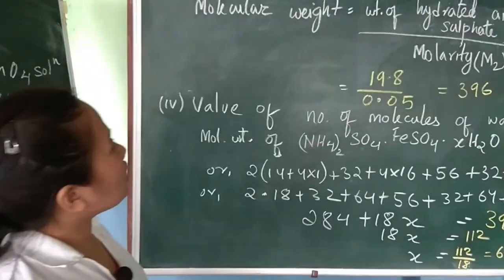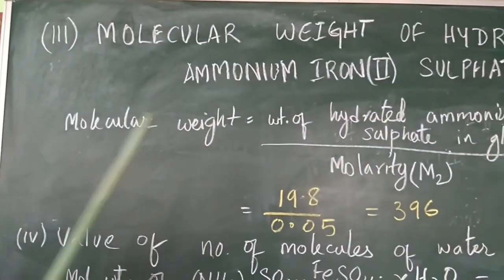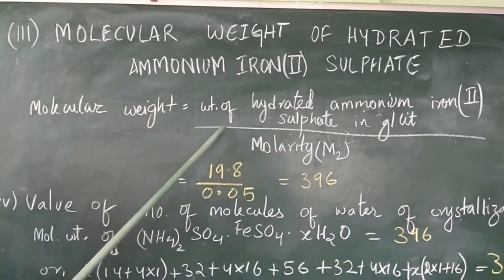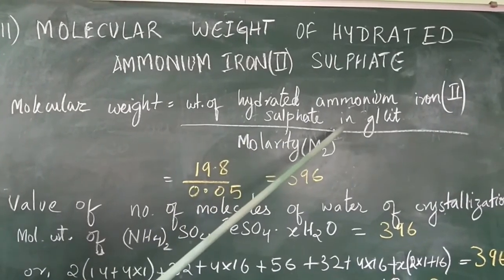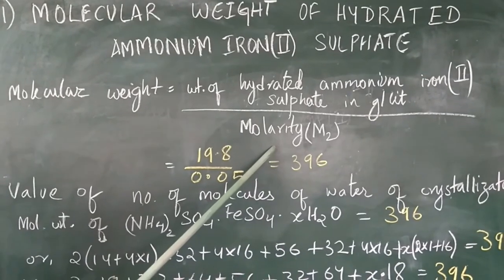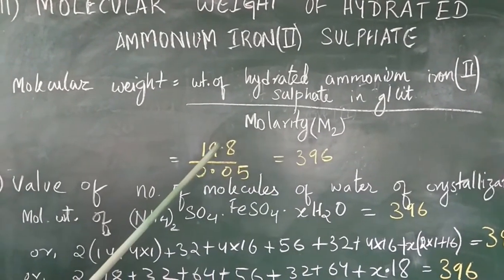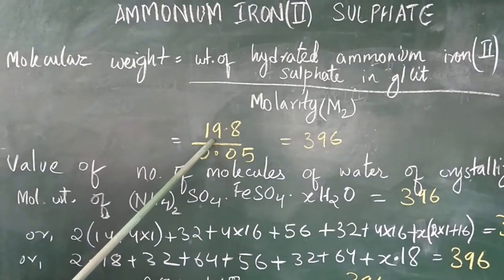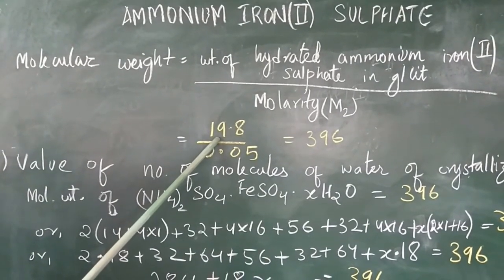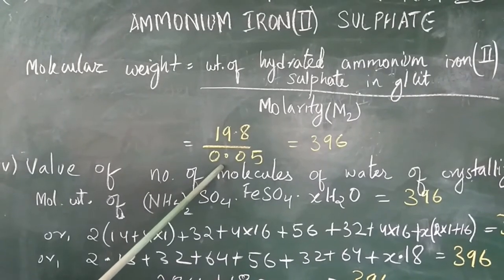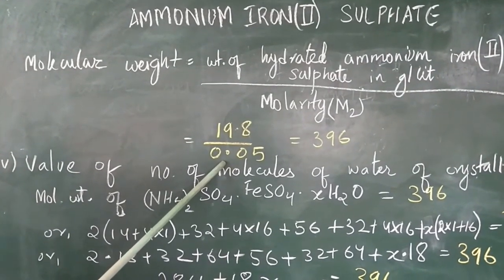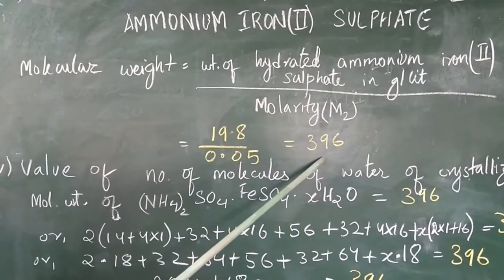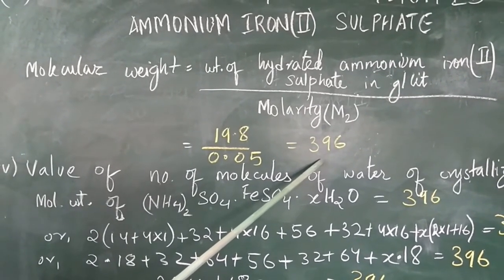Now we will calculate the molecular weight or molecular mass of hydrated ammonium iron 2 sulfate, which equals weight of hydrated ammonium iron 2 sulfate in grams per litre divided by its molarity M2. The quantity was 19.8 grams per litre and M2 = 0.05, giving a molecular weight of 396.